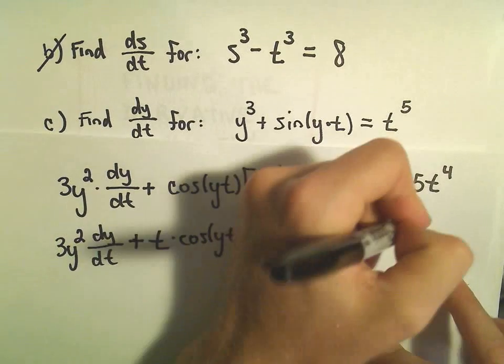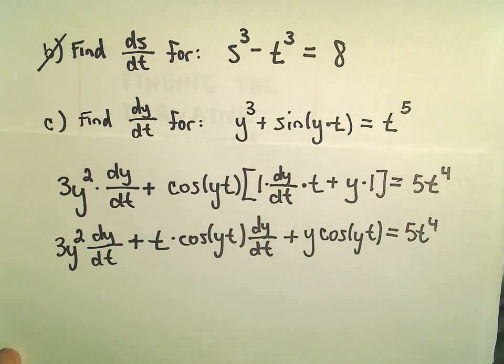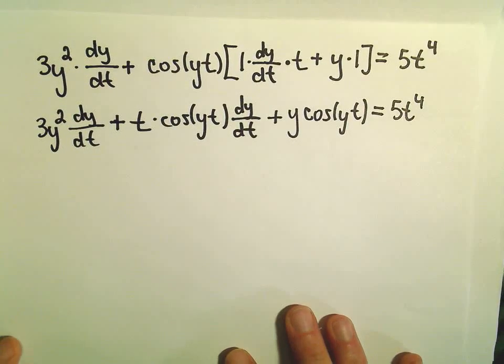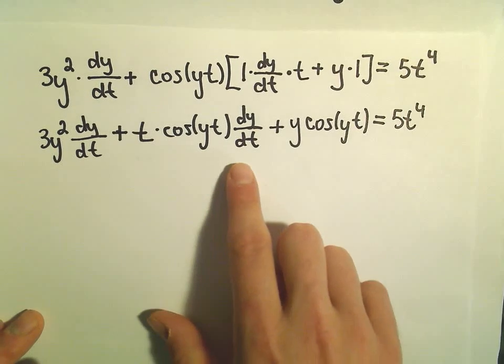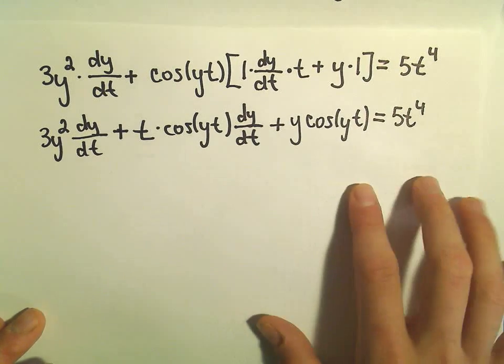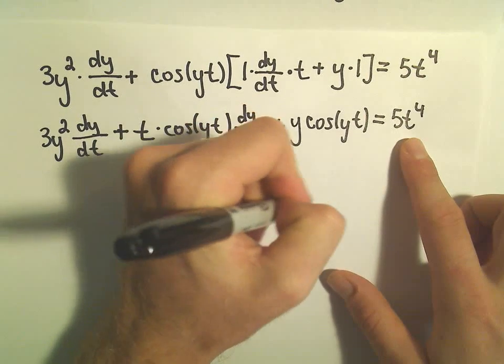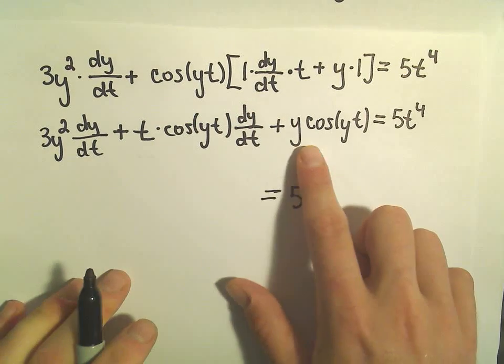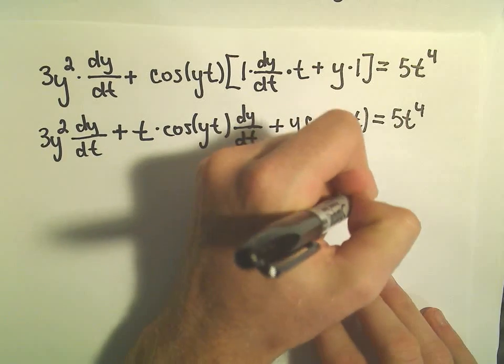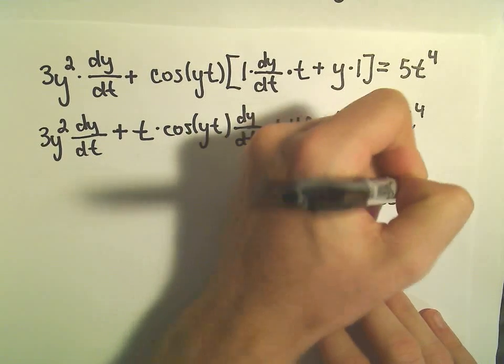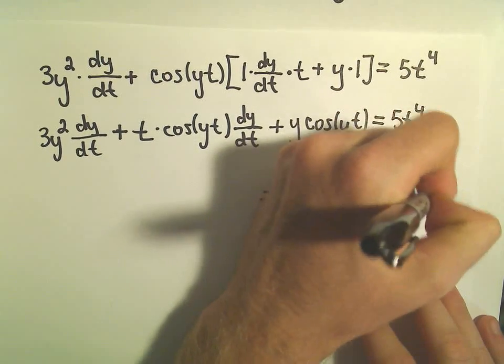On the right, we still have our 5t to the fourth just hanging out. And now I'm going to move everything that doesn't have a dy dt attached to it over to the other side. So let's see here, there's our 5t to the fourth. I could subtract the y cosine of yt from both sides. So we've basically moved that over to the other side.